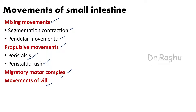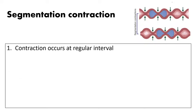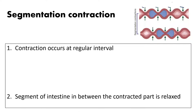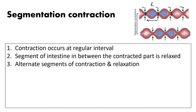Let's begin with the mixing movements. The first is segmentation contraction. Contraction occurs at regular intervals along the intestine — you can see the arrow marks where contraction is occurring at regular intervals. The segment of intestine between contracted parts is relaxed, so there are alternate segments of contraction and relaxation.